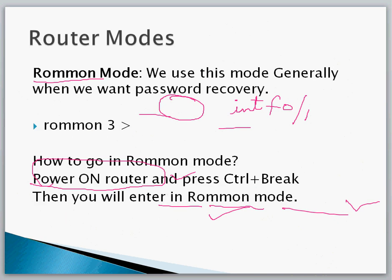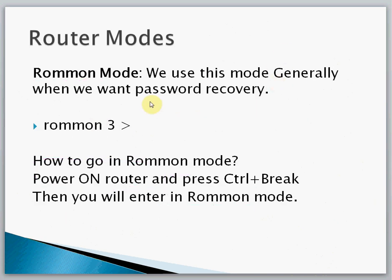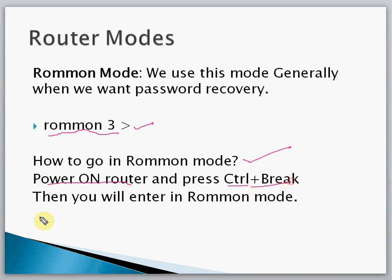The last mode is ROM Mode (ROMMON). We use this generally to recover a password — if we forget the password and want to recover it, we go to ROM Mode. The prompt looks like 'rommon>'. To enter ROM Mode, power on the router and press Ctrl+Break. Now let me open Packet Tracer and demonstrate all these modes practically.